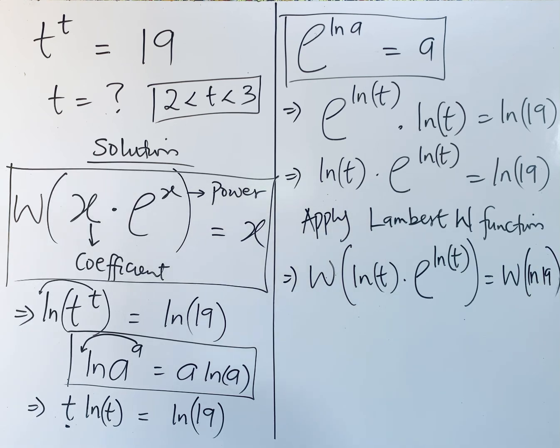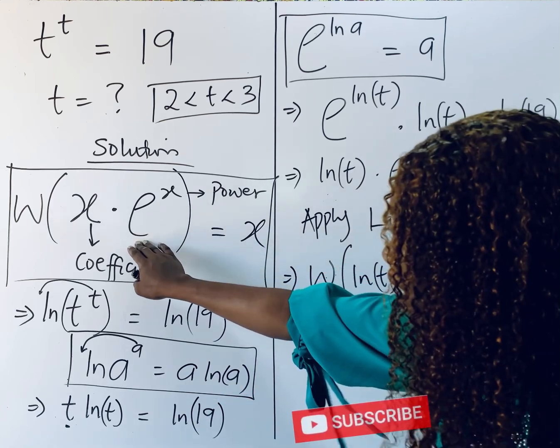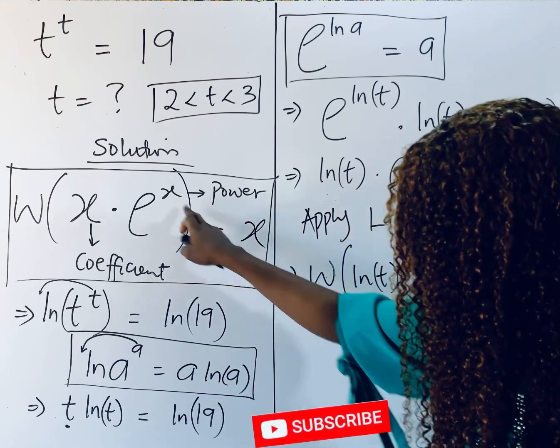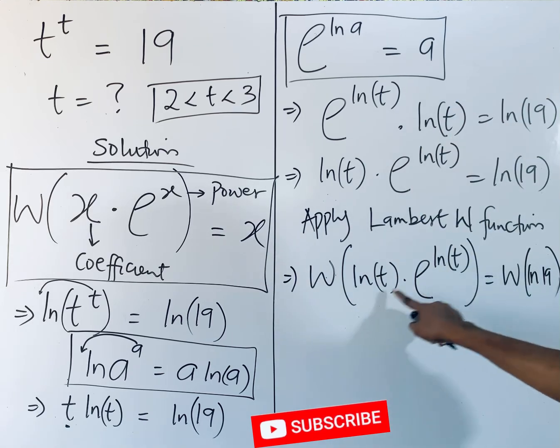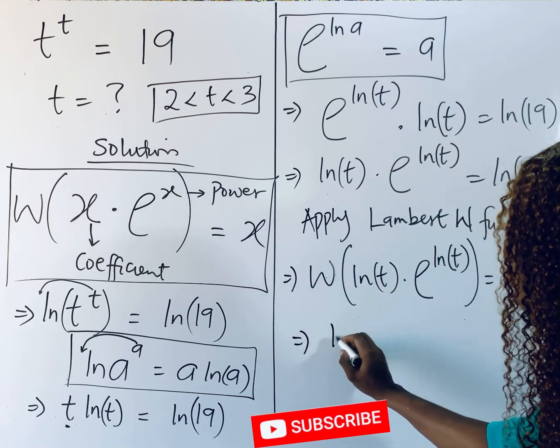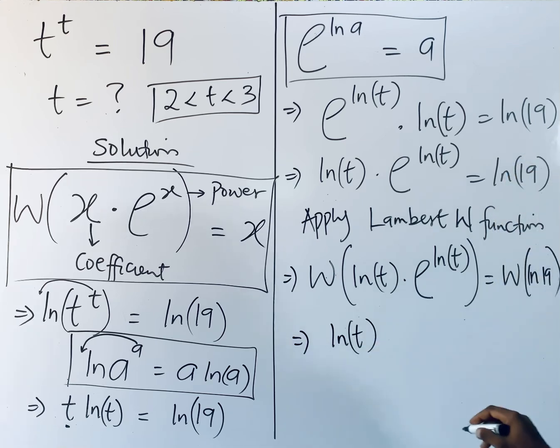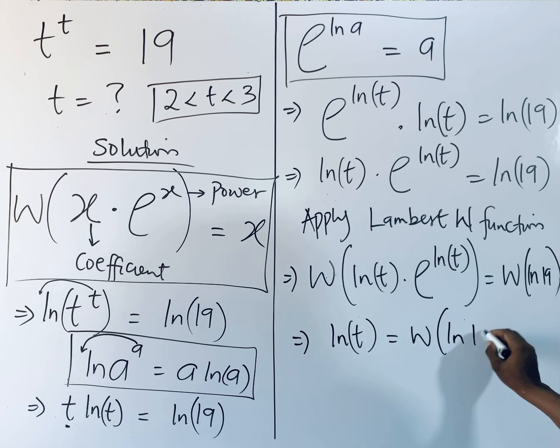So what do we do again? This is now of this form, and this equals x. You observe that this x is the power, which is the same as the coefficient. So here, this and this are the same. So we're going to have ln of t, and that will equal Lambert W of ln of 19.